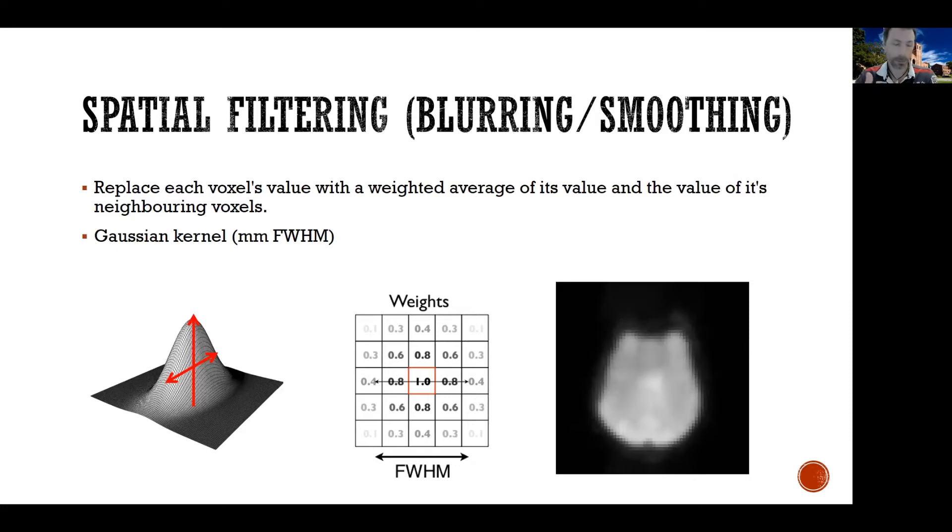The idea behind this is that nearby voxels contain neurons that are probably doing similar things. So it makes sense that if you can average together the voxels that are reflecting the same neural population, if there's any noise in there, just by averaging it you're averaging out noise, which means you're decreasing the noise and increasing your signal to noise ratio. So blurring is a means of increasing the signal to noise ratio.